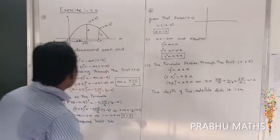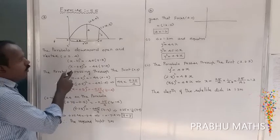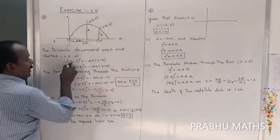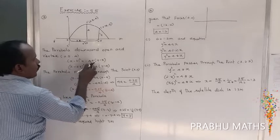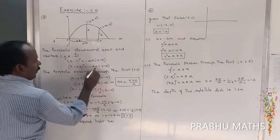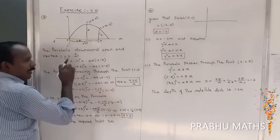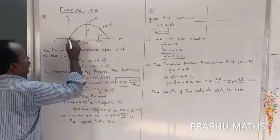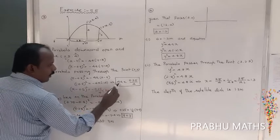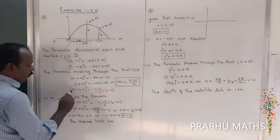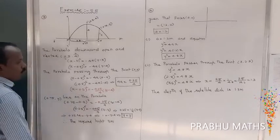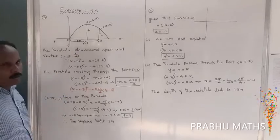The vertex is not at the origin, so the general form is (x − h)² = −4a(y − k). With vertex (0.5, 4), we get (x − 0.5)² = −4a(y − 4). The parabola passes through the origin (0, 0). Substituting x = 0, y = 0, we get 4a = 0.25/4.